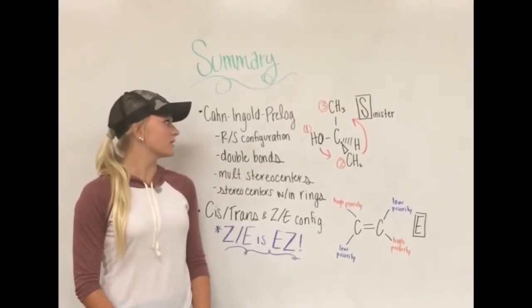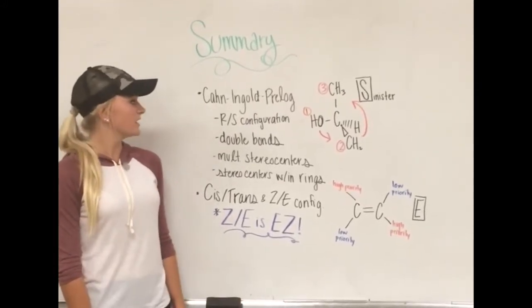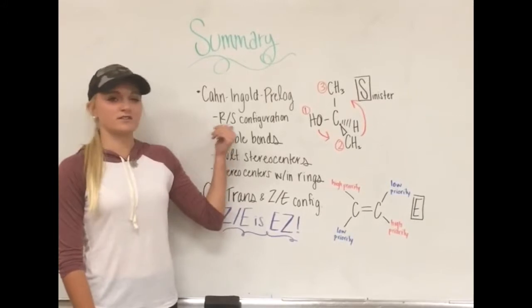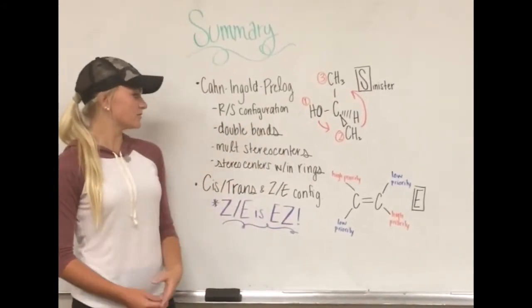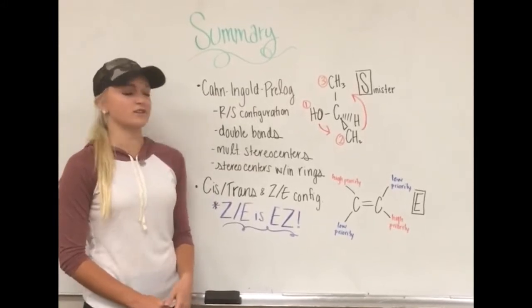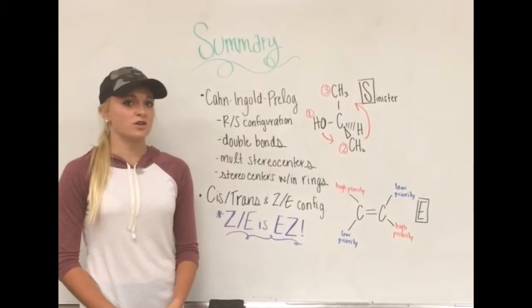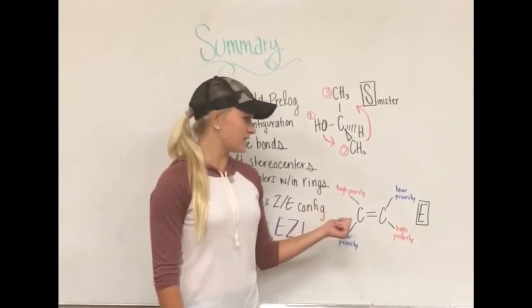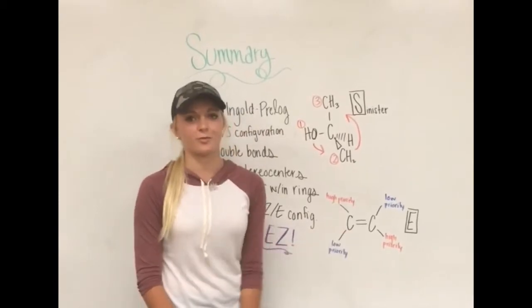We also took a look at the Cahn-Ingold-Prelog convention, which assigned priority to substituents about a stereocenter. We used this to figure out the R/S configuration. We also took a look at the rules concerning double bonds, multiple stereocenters, and stereocenters within rings. We also took a look at the cis, trans, and the Z/E configuration. This will assign the titles to the location of the high priorities about a double bond.